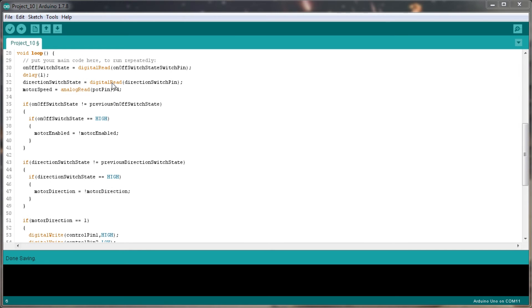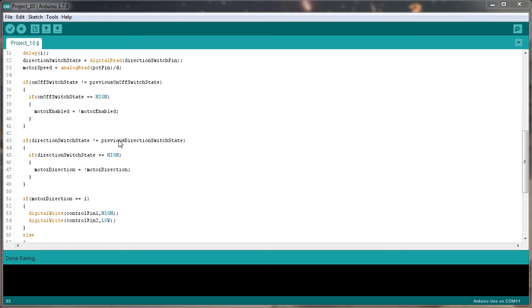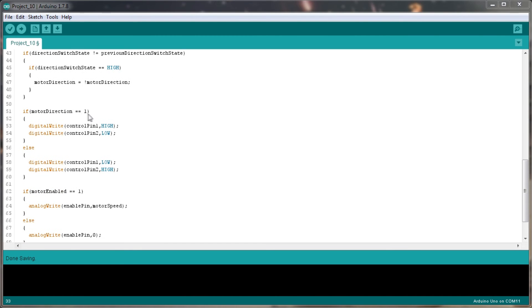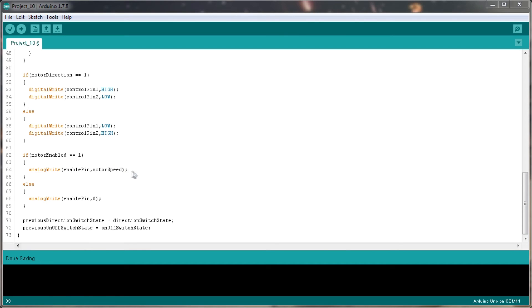Setting the motor speed to be the analog read of the potentiometer pin, then if the on off switch state is not equal to the previous on off switch state, then we're setting the, well, then if the on off switch state is high, then the motor enabled is equal to not motor enabled, so we're flipping that over, and doing a similar thing with the direction switch state, then if the motor direction is one, the control pins basically flip over, depending on the motor direction, if the motor enabled is one, then we're enabling the analog write to the enable pin, and giving it the motor speed, else we're setting the motor speed to zero, basically, and that's about it, so, let's try and upload this, and see if there any errors with the code, no, looks like it's all fine, so let's switch back over to the camera now, and see if everything's working.